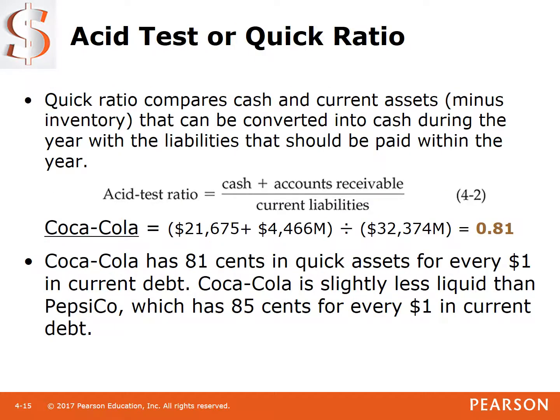The other ratio that tests how well we can pay current liabilities is the quick ratio, also called the acid test or liquid ratio. The quick ratio compares cash and current assets that are very much like cash — specifically cash and accounts receivable, which are the liquid or quick assets — divided by current liabilities. For Coca-Cola, cash is $21,675 million and accounts receivable is $4,466 million. Adding those together and dividing by current liabilities gives 0.81.